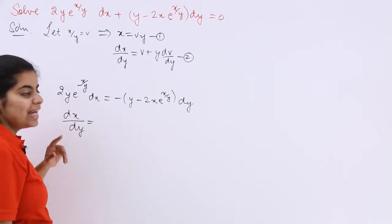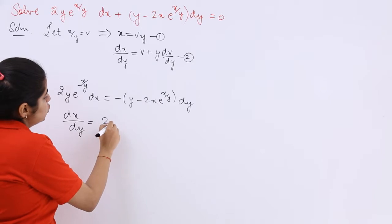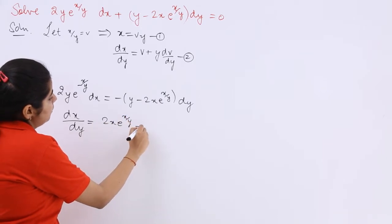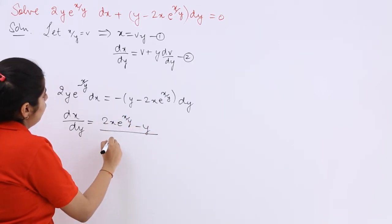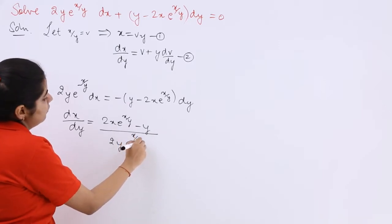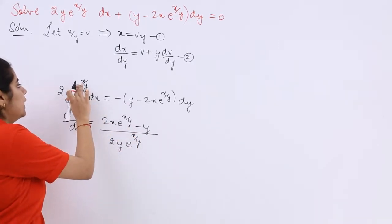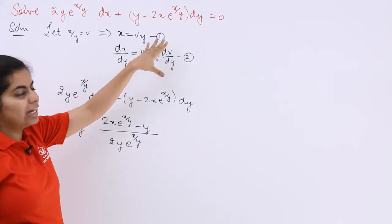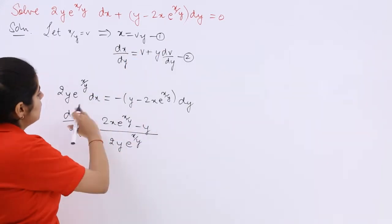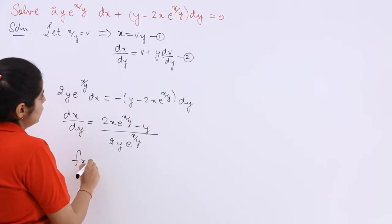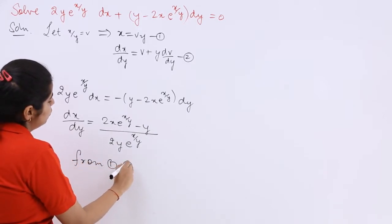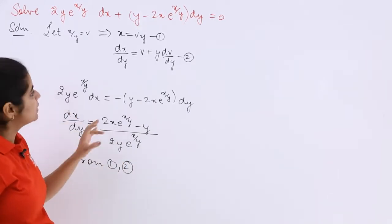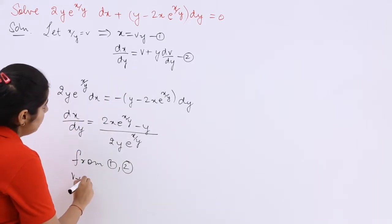dx upon dy is equal to (2x·e^(x/y) - y) / (2y·e^(x/y)). Right? This is not a negative sign. This is simply a plus sign. Now you can just simply put the values that you have found out. So this is like from equation number 1 and 2. What are you going to do? You are going to put the value of dx upon dy which is v plus y